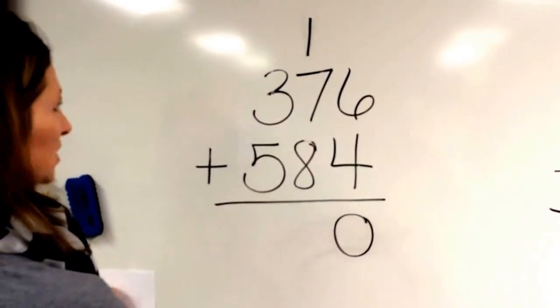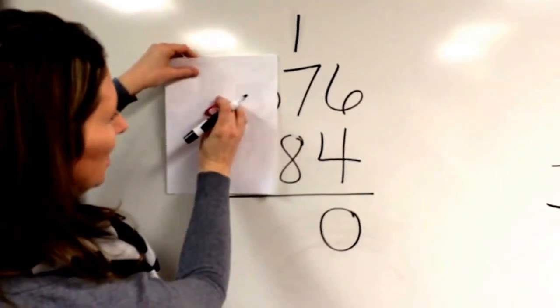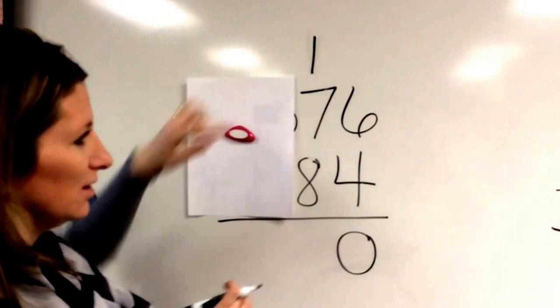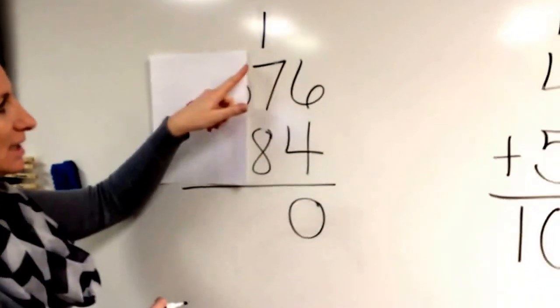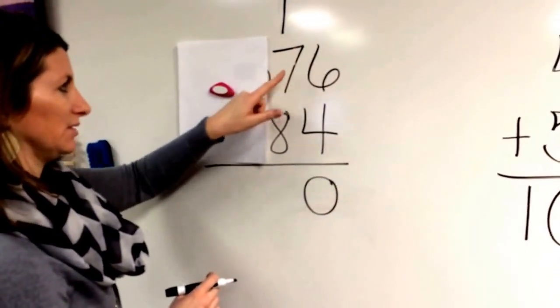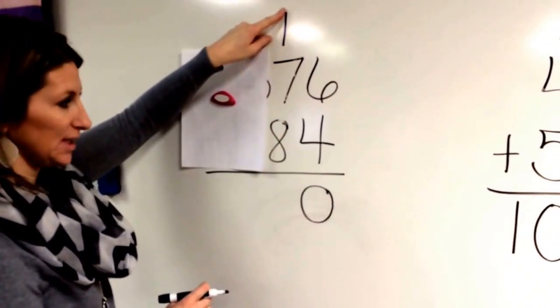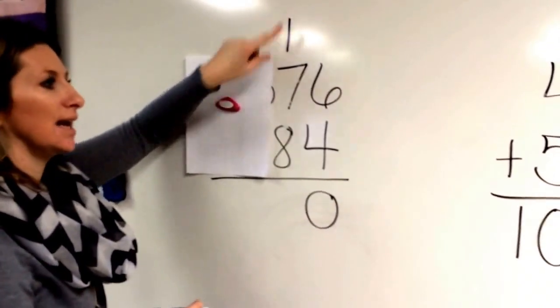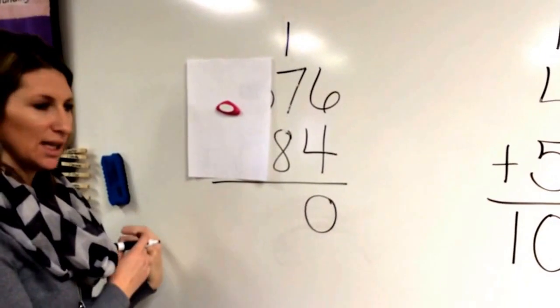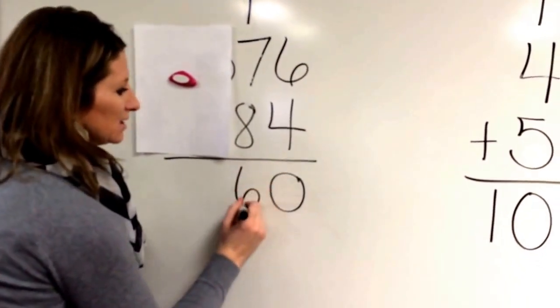Then I just add the next column. So just focus on this column right here, the tens column. Eight, nine, ten, eleven, twelve, thirteen, fourteen, fifteen. Don't forget about this one. Sixteen. Ten and above, I have to move it over to the next column again. So my six goes here.